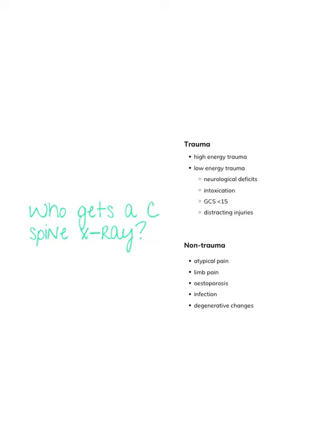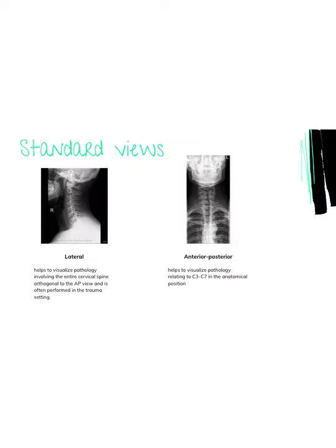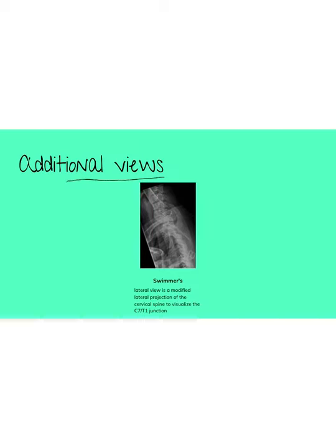Individuals who receive c-spine x-rays are either trauma or non-trauma patients. Our trauma patients are typically high energy trauma patients and low energy trauma patients with specific indications. Looking at the x-ray details, we look at the patient's name, date of birth, folder number, and the date and time of the radiograph. There are four standard views: lateral, anterior-posterior, odontoid, and oblique. The swimmer's view is an additional view, typically done to visualize the C7-T1 junction or if an adequate lateral c-spine cannot be obtained.